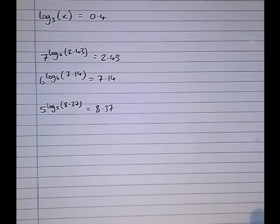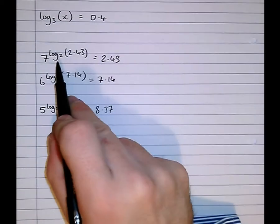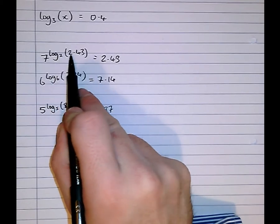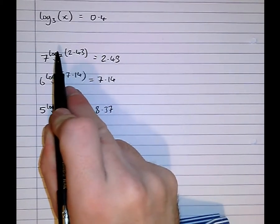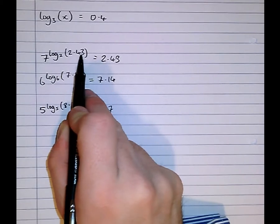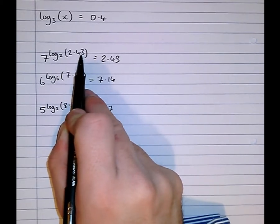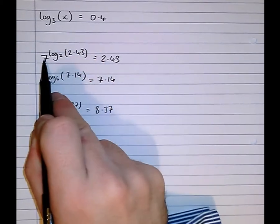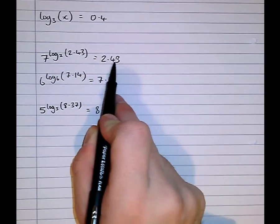So we dig a little bit deeper, we'll see why that's the case. This logarithm here is saying log to the base 7 of 2.43. It's saying what power do we have to give 7 to get 2.43. And whatever that power is, we then give that power to 7 to get 2.43.